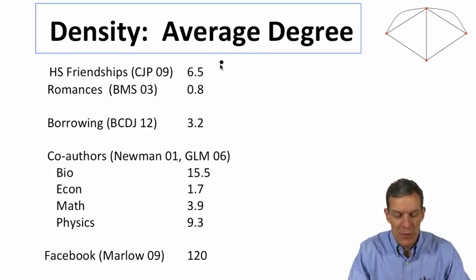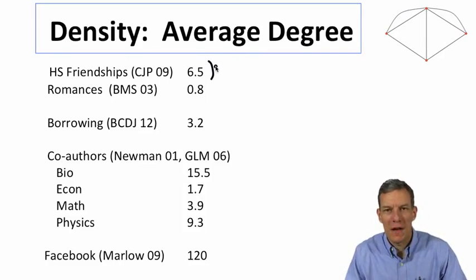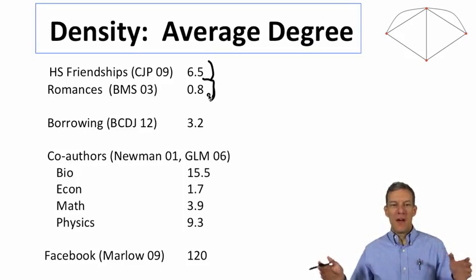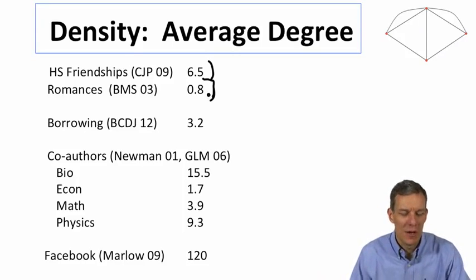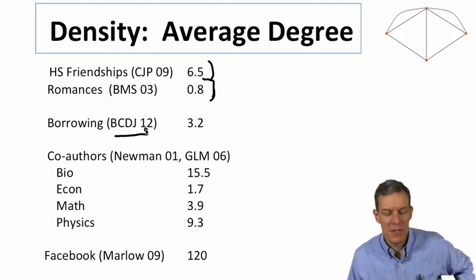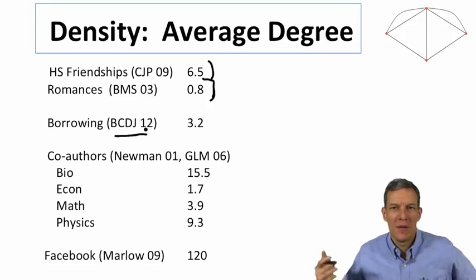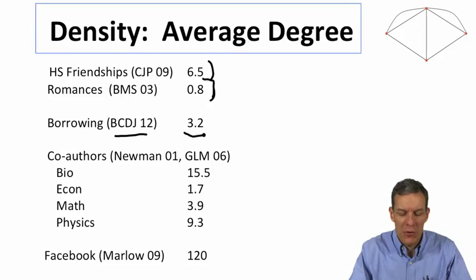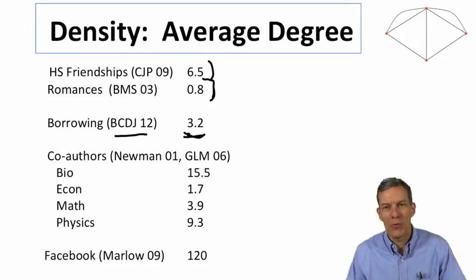So for instance, these high school friendship networks on average, 6.5 connections per individual degree. There's a paper by Bearman, Moody and Stovel looking at romantic relationships in some of these high schools. There people had, on average during a time period, about 0.8 of a relationship. You can look at, this is data from work I did with Abhijit Banerjee, Arun Chandrasekhar, and Esther Duflo on borrowing money, borrowing kerosene and rice from other individuals in small rural villages in India. Average of other households that a given household borrows from, 3.2.